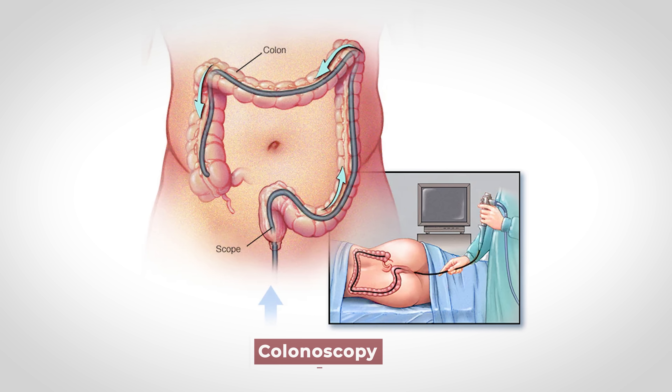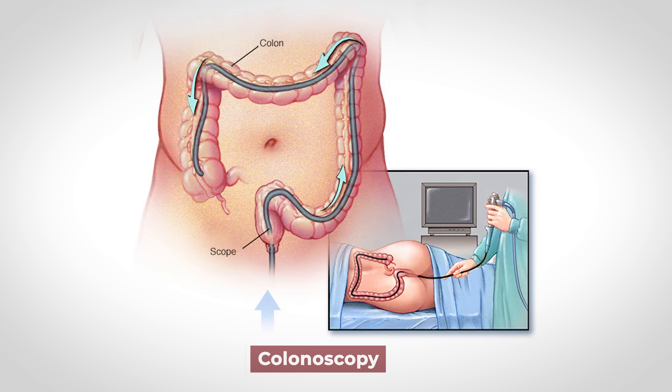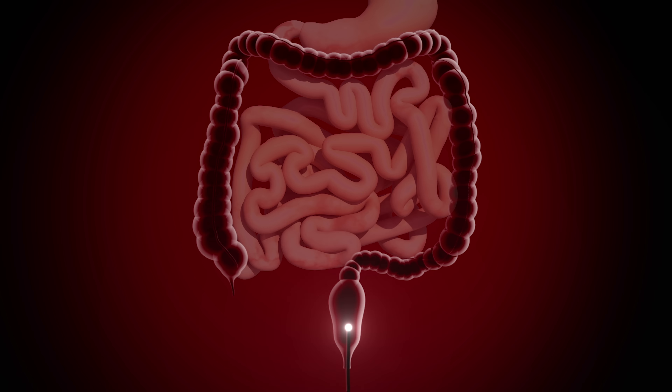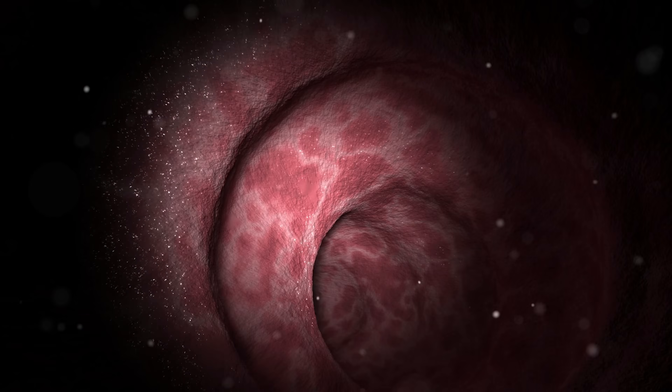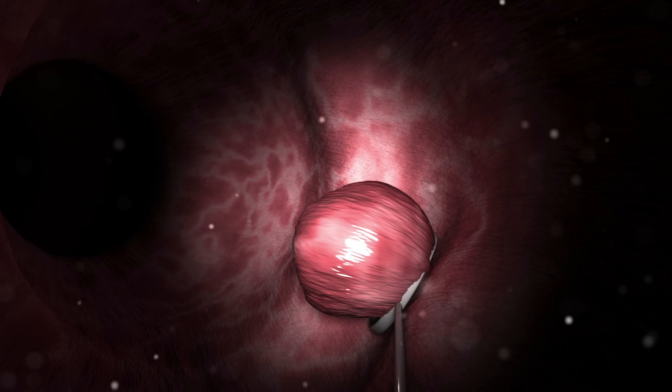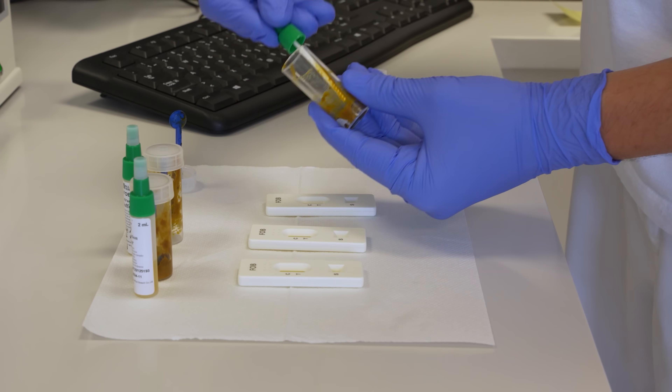Prevention and early detection is totally doable, starting with screenings like colonoscopies. Colonoscopies are recommended starting at age 45 for those at average risk, or earlier if you have a family history of colon cancer or other risk factors. Colonoscopies can actually prevent cancer by removing polyps on the spot. There are also stool-based fecal immunochemical tests which can detect hidden blood in the stool and be used as a screening tool. I recently had a colonoscopy done — I went in a few years early because I had some other things going on.